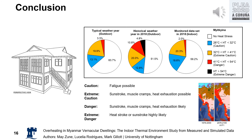The heat index combines relative humidity with air temperature to reflect perceived heat stress. The results of heat index and dry-bulb temperature are presented in this study using a one-year measurement dataset. We found that the Myanmar vernacular housing will hardly provide the required physiological thermal comfort under future climate change scenarios.